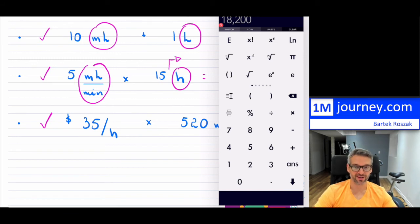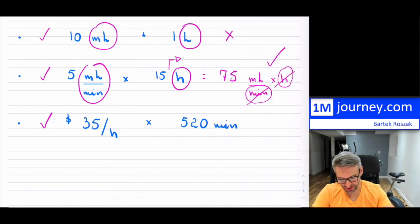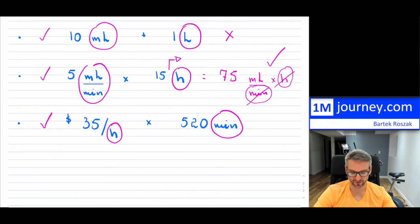Here it says you were making $35 per every single hour. And then here, this is probably saying that you worked for 520 minutes. So convert this back to hours. And you can do that, again, you know that there's 60 minutes in an hour.